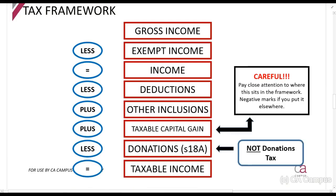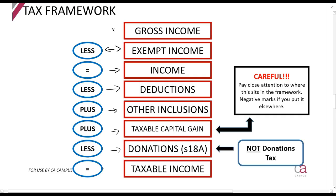The tax framework — at a very high level — shows how we calculate taxable income. We say gross income, less exempt income, gives us income. Then we deduct all sorts of deductions. We include other inclusions — things which are not gross income but which the Act specifically tells us to include, like allowances. We add any taxable capital gains. We deduct any donations made to public benefit organizations — this is not donations tax — and that gives us taxable income.